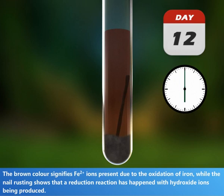While the nail rusting shows that a reduction reaction has happened with hydroxide ions being produced. This is written as 2H2O + O2 + 4e- → 4OH-.